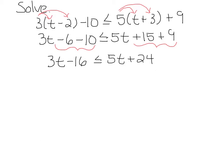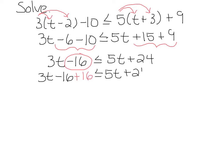Now we want to get all of our numbers on one side and all of our variables on the other side. I like to keep my variables on the left-hand side, so I'm going to move this guy to the right by adding 16 to both sides. Remember, when you want to eliminate something, you must do the opposite — the opposite of subtraction is addition. We have 3t less than or equal to 5t plus 40.